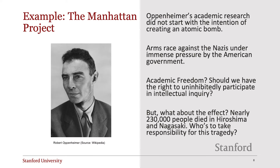A classic example of a dual-use technology is the Manhattan Project, headed by the US government during World War II. When Oppenheimer began his research into theoretical physics, he did not intend to create a bomb. But during the volatile political climate of that time, his strictly academic research bled into the public and geopolitical sphere in an arms race with the Nazi regime. There were definitely positive outcomes of Oppenheimer's work. The first was a purely intellectual one — the academic freedom to uninhibitedly participate in intellectual inquiry.